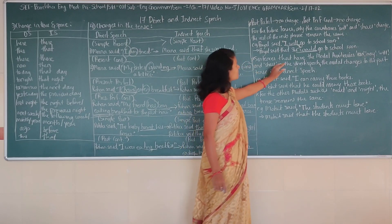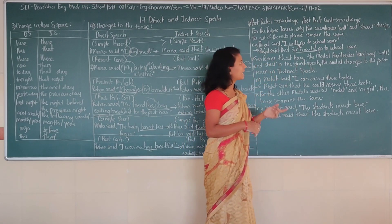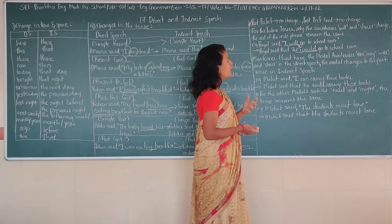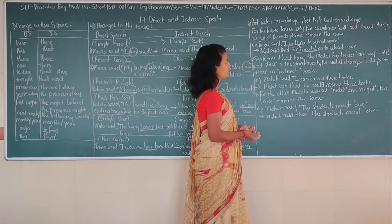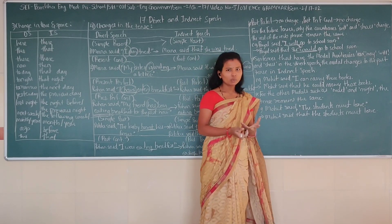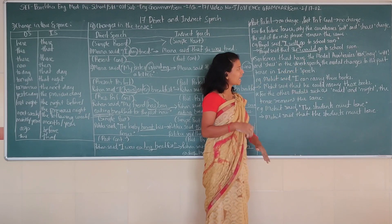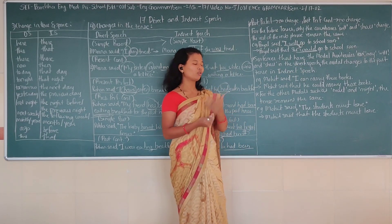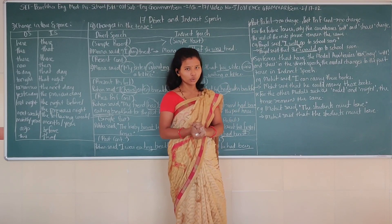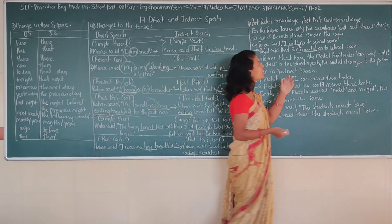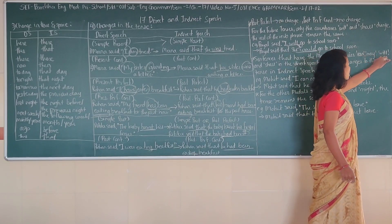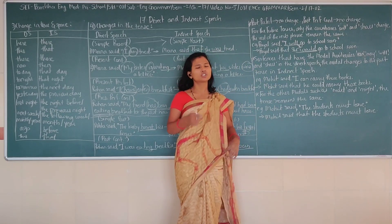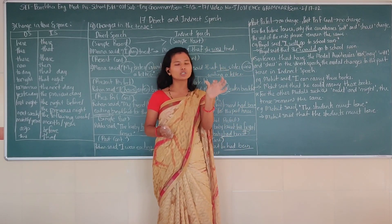Sentences that have the modal auxiliaries 'can', 'may', 'will', and 'shall' — these modals change to their past forms in indirect speech. The past of 'can' is 'could'; the past of 'may' is 'might'; 'will' becomes 'would'; 'shall' becomes 'should'. You have to change only the modal auxiliary to its past form.